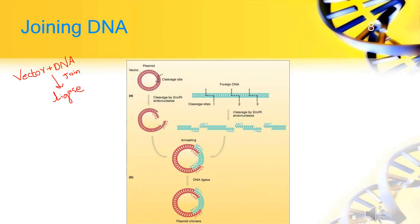The next step is joining of DNA. Fragments and sections of DNA are joined in this step with the help of enzyme DNA ligase. Ligation is the process of putting these two parts together using DNA ligase. The new hybrid DNA is known as a recombinant DNA molecule, and the process is known as recombinant DNA technology.